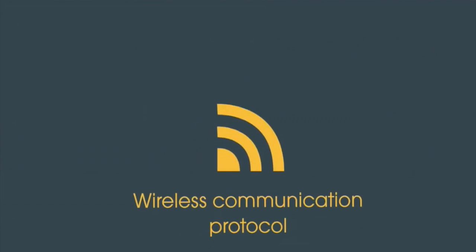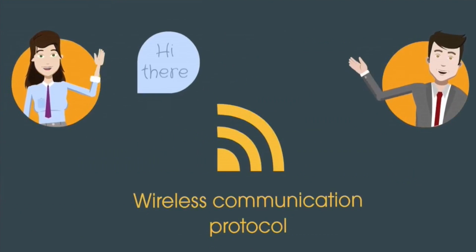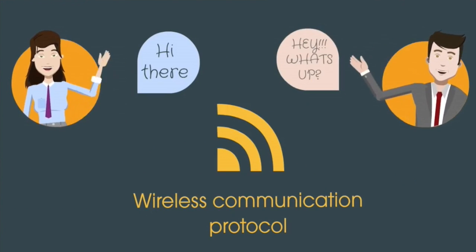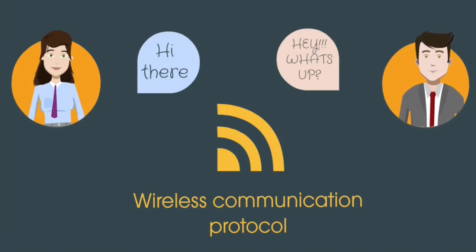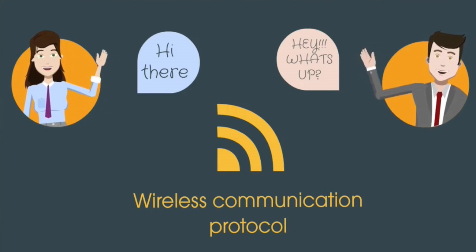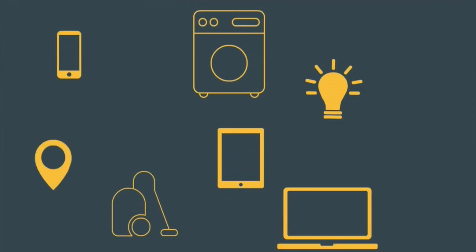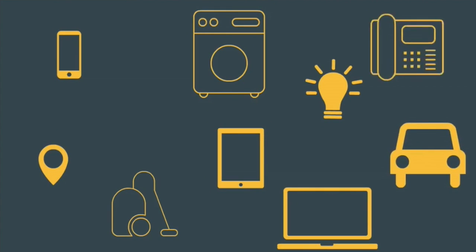Z-Wave is a wireless communication protocol which has been known for home automation. A wireless communication protocol is simply a set of rules or standards that an application or program should follow in order to communicate wirelessly. It's just like how we human beings communicate in one common language — I'm delivering this information in English and you're able to understand me because we are following the same communication protocol. This Z-Wave protocol allows multiple wireless devices to communicate with each other in an affordable and reliable way with easy-to-use smart products.